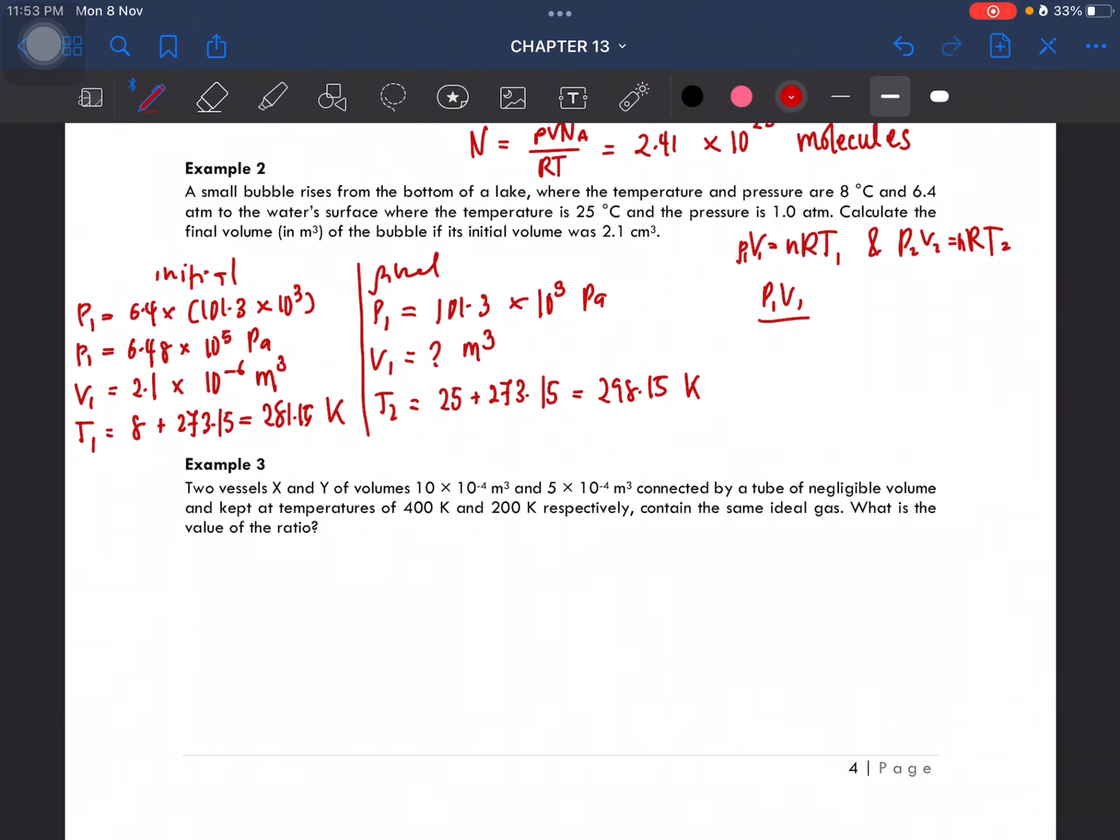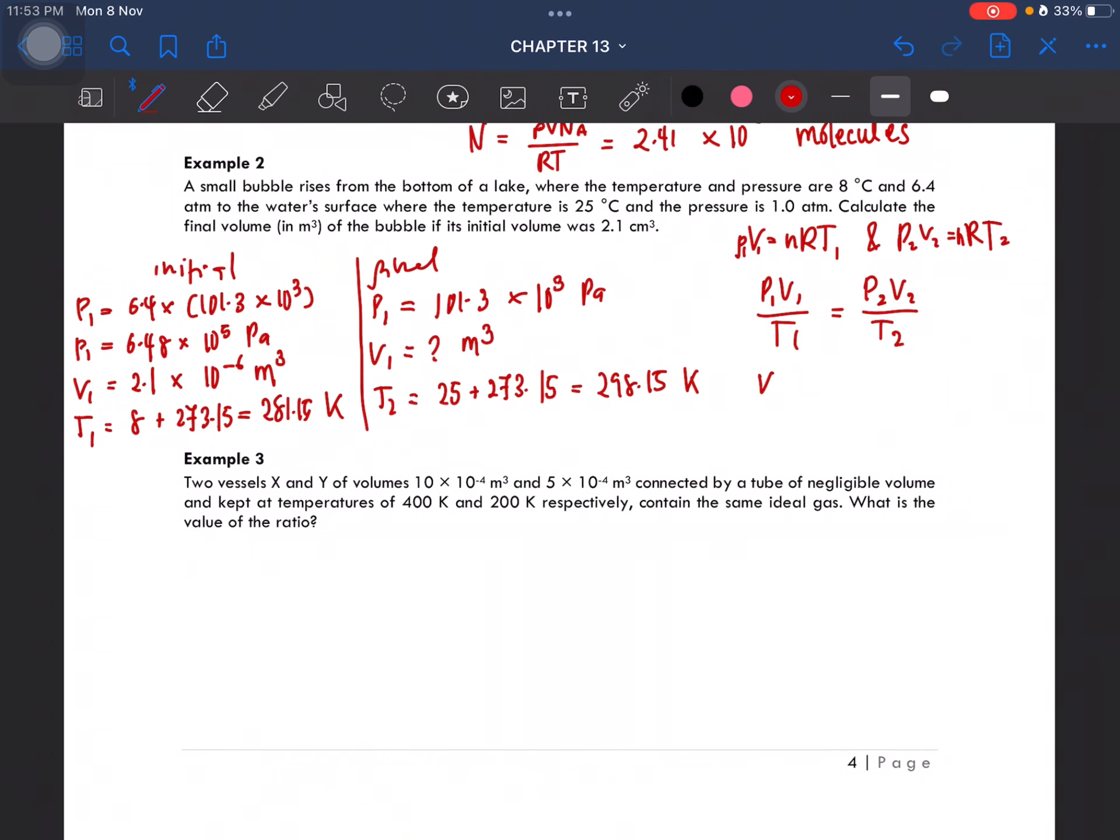So we get P₁V₁ over T₁ equals P₂V₂ over T₂. From here, rearrange to get V₂. So this rearranges to V₂ equals P₁V₁ over T₁ times T₂ over P₂. Okay, so you should get the answer 1.425 times 10 to the power of negative 5 cubic meters as the final volume.